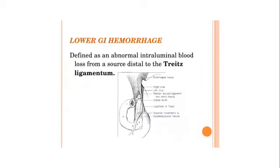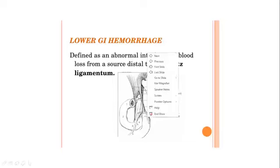Lower GI hemorrhage is defined as abnormal intraluminal blood loss from a source distal to the Treitz ligament. The Treitz ligament is also called the duodenojejunal (DJ) junction. So below the DJ junction, distal to the DJ junction, any bleed that occurs is called lower GI hemorrhage.